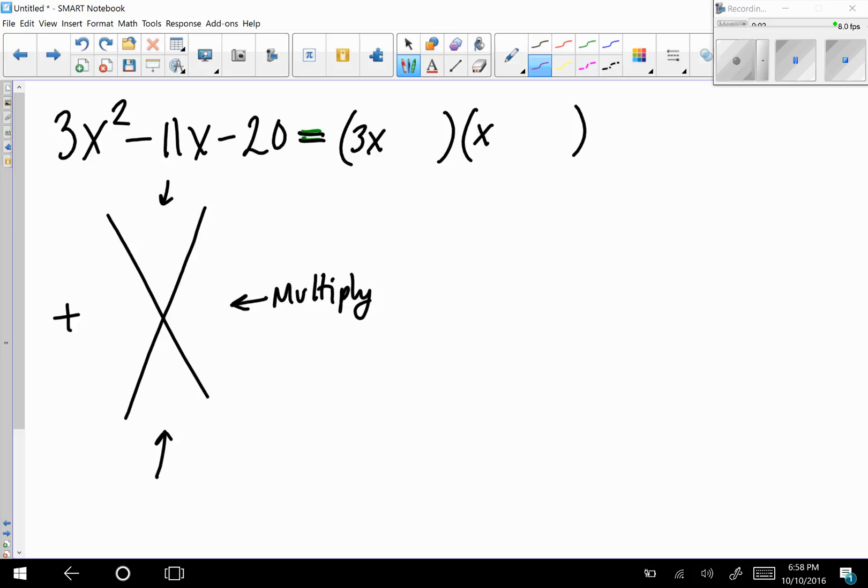So if you have a leading coefficient, it's a little bit different what you want them to multiply together to be. And this is a trick that works regardless of what methods you're going to use. You want to first multiply A and C together. So multiply A and C, keeping this on. And that's the value that I'm going to look for to see what they multiply together to be. But then I want them to add up to be, as usual, B. Whether B is positive or negative.